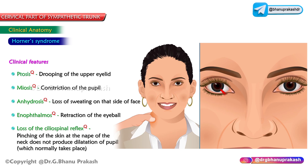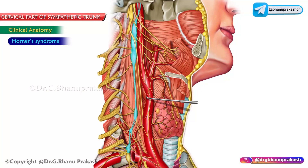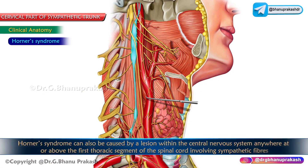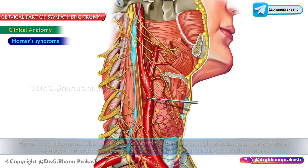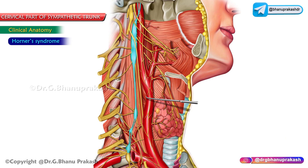There is also loss of the cilio-spinal reflex, meaning pinching the skin on the nape of the neck does not produce dilation of the pupil as it normally would. These are the cardinal features of Horner's syndrome, which can also be caused by a lesion within the central nervous system at or above the first thoracic segment of the spinal cord involving the sympathetic fibers.